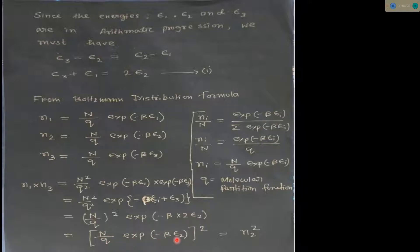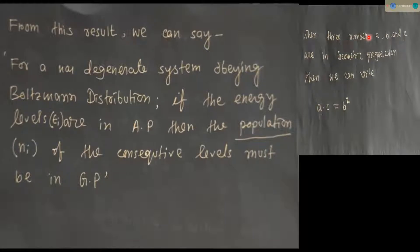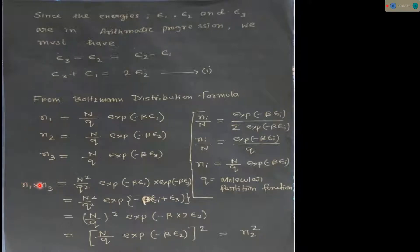Now, N upon q times exponential minus beta epsilon 2 is exactly n2. So the whole term in the bracket is n2, and it is squared. Therefore n1 times n3 equals n2 squared. This is the relation between the populations. When three numbers a, b, c are in geometric progression, we can write a times c equals b squared.